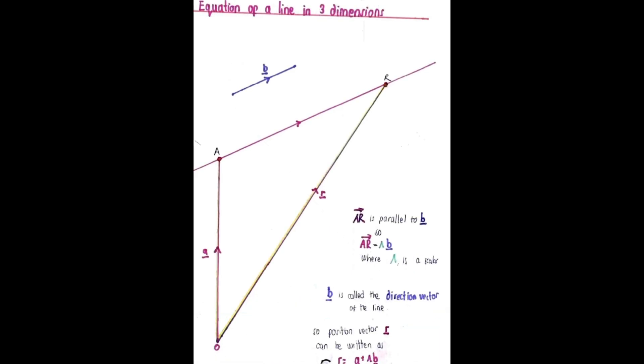Suppose a straight line passes through a given point A with position vector A and is parallel to the given vector B. Only one such line is possible. Let R be an arbitrary point on the same line with position vector R. AR is parallel to B so AR equals lambda B where lambda is a scalar.